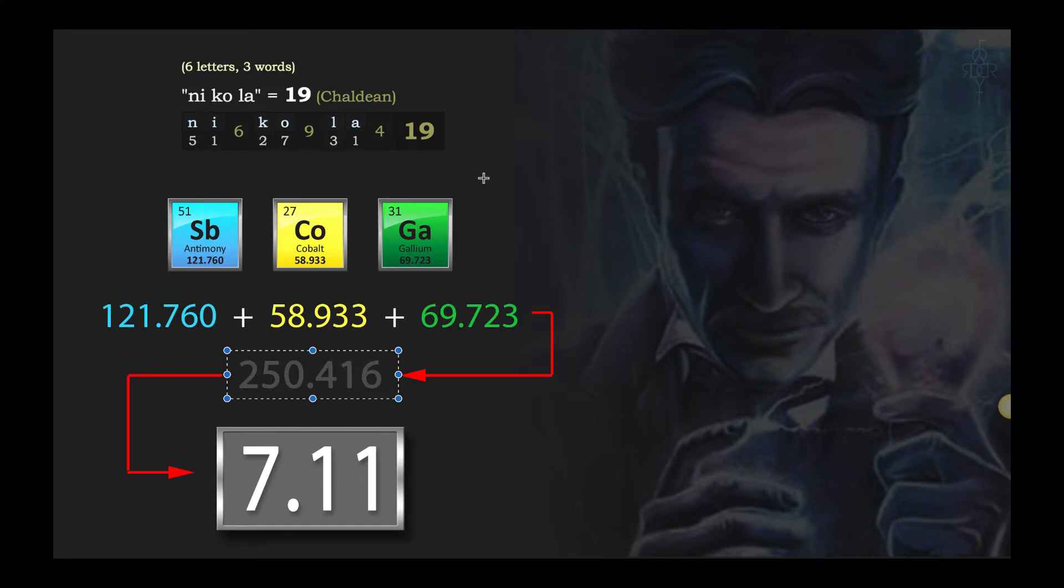That's the crazy part. Like attracts like. These numbers are following me around. Are they following me around to tell me a story? Or are they following me around to express a narrative for all of us to see? The atomic weights of the 51st, the 27th, and the 31st element ends up being 250.416. Now when you look at that number, nothing too special. But when you reduce it down in numerological standpoints, you get the 711.